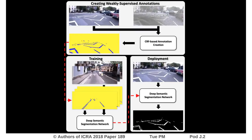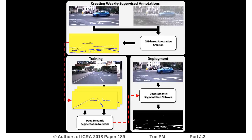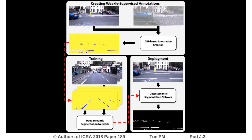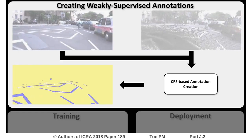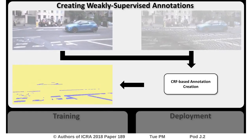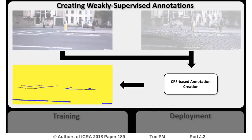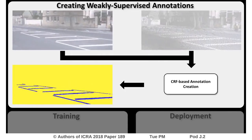Our framework consists of three sequential stages. We combine different sensor modalities in an offline process to create road marking annotations in an automated way.